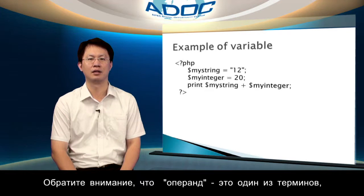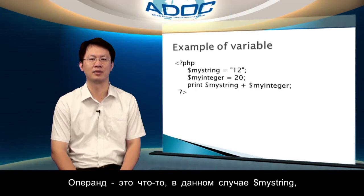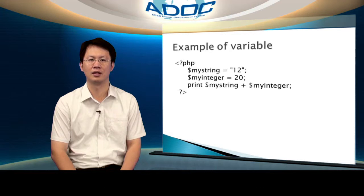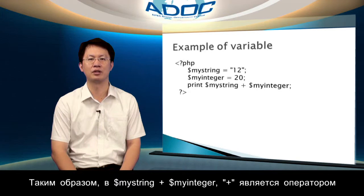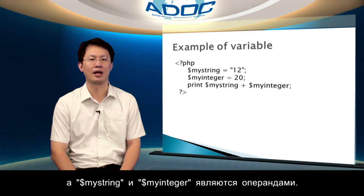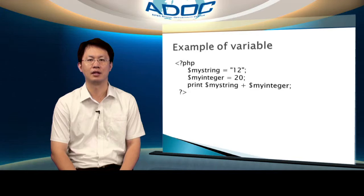Note that 'operand' is one of those terms you learned at school and forget the minute you leave. An operand is something — in this case, mystring — upon which a mathematical function, in this case plus, is being performed. So in mystring plus myinteger, plus is the operator, and mystring and myinteger are the operands. PHP comes with lots of built-in operators to let you work on data, such as addition and subtraction, and so on.